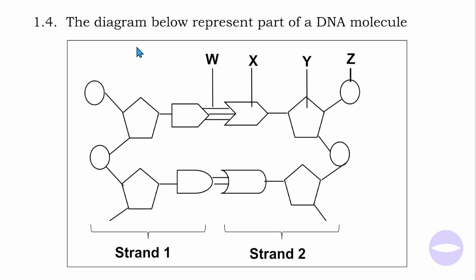The question goes like this: the diagram below represents part of a DNA molecule. We are told this is Strand One and Strand Two. DNA is made up of two strands, and in between there is a bond. The bond that is in between the strands is a hydrogen bond, so W is a hydrogen bond.